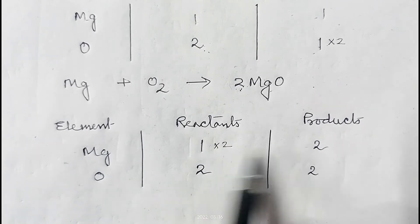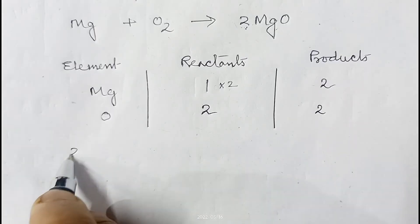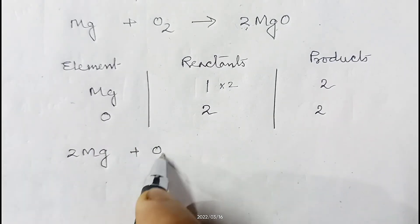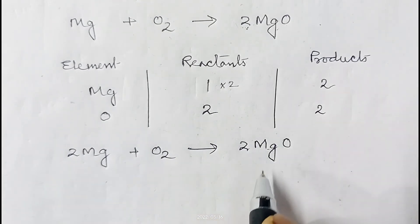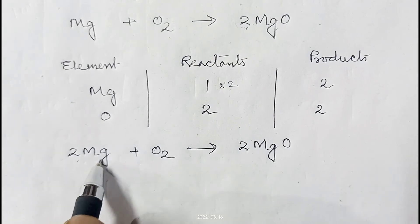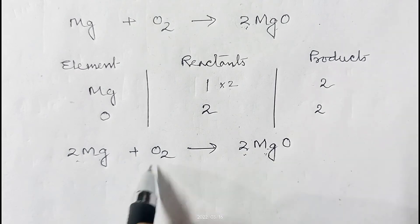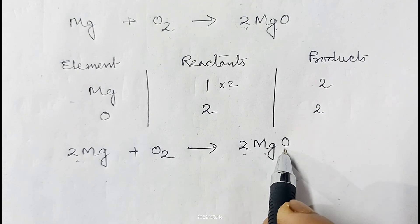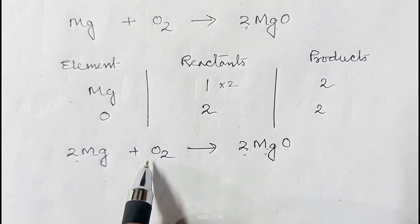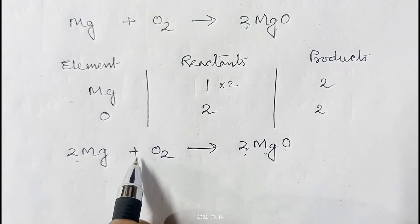We need to multiply magnesium by two on the reactant side. This gives us: 2Mg + O₂ → 2MgO. Now we have two atoms of magnesium on both sides and two atoms of oxygen on both sides. The number of atoms of both elements are equal on both sides, so the equation is balanced.